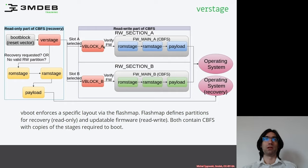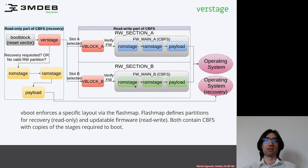If slot A is not valid and verification of the hash failed, the VBoot logic will try partition B and perform a similar operation — verifying Firmware Main B via VBlock B. If it succeeds, the first stage will pass control to the ramstage in partition B, and the ramstage will continue to subsequent stages.